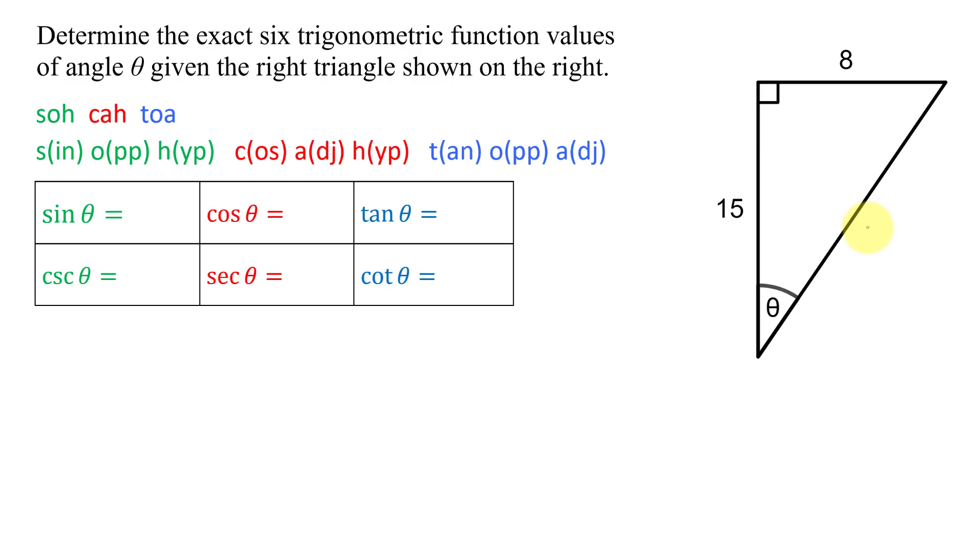Remember, the hypotenuse is the side opposite the right angle. I'm going to label that C. And to find C, we're going to use the Pythagorean theorem, which says that A squared plus B squared equals C squared. The sum of the squares of the two legs equals the square of the hypotenuse.